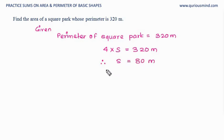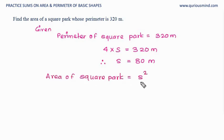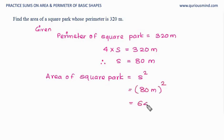So the side of the square park is 80 meters. Now, area of the square park is equal to side squared. The formula for area of a square is side squared. Side is 80 meters, and 80 squared: 8 eights are 64, and the zero turns into two zeros, giving us 6400 meter square.